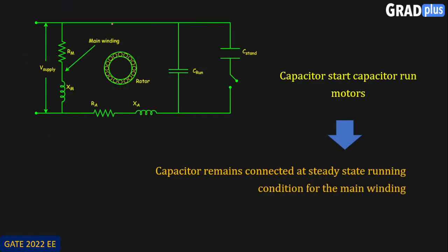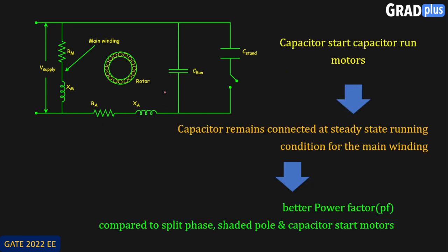Here you can see the diagram for the capacitor start capacitor run induction motor. This is the capacitor C-run, which remains always connected with the main winding. This is the main winding and this is the auxiliary winding. The capacitor C-run is always connected to the main winding at the steady state running condition, and this improves the power factor of the complete network. The power factor here is around 0.95.